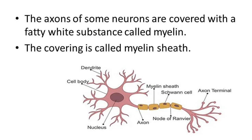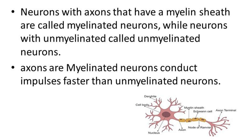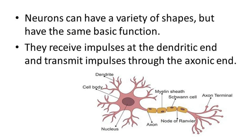The axon is covered with a fatty white substance called myelin. The nodes of the axon are covered with this fatty white substance, which is why it is called the myelin sheath. Neurons whose axons have a myelin sheath are called myelinated neurons.